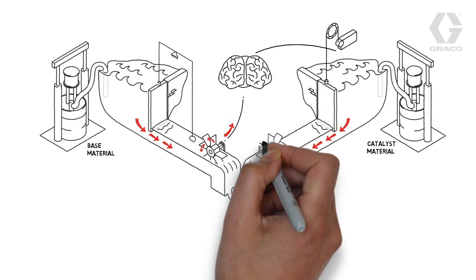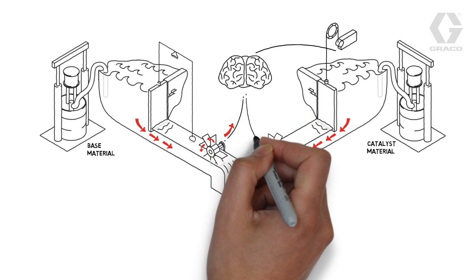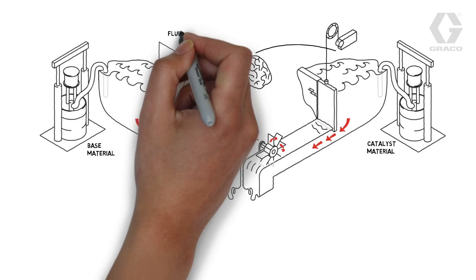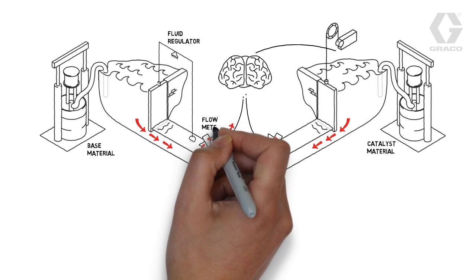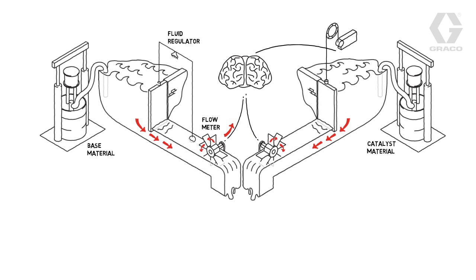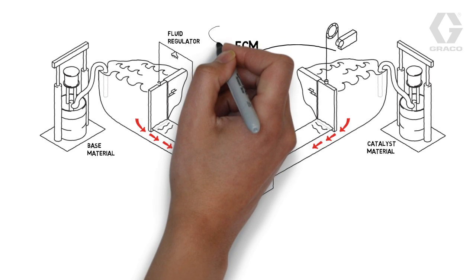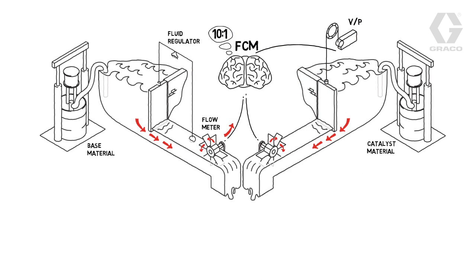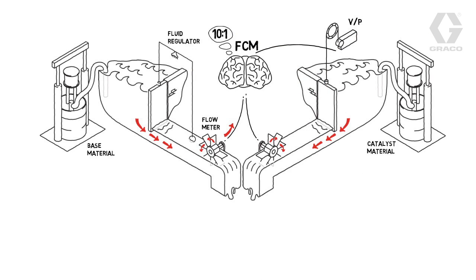The flow meter sends information on how much catalyst material is flowing to the FCM. Now, let's tie it all together. The base material flow rate is manually set by the operator by a fluid regulator. The base flow meter tells the FCM how much is flowing. The FCM knows the requested ratio. The system then adjusts the catalyst flow rate by adjusting the V-to-P signal. This will open or close the regulator to get more or less material to get the right ratio.